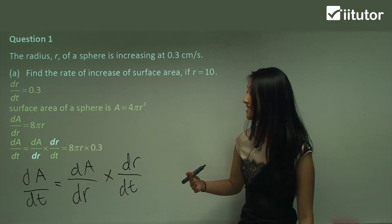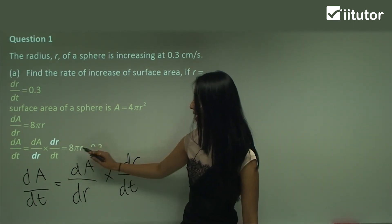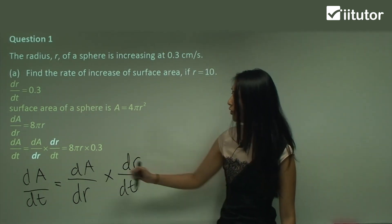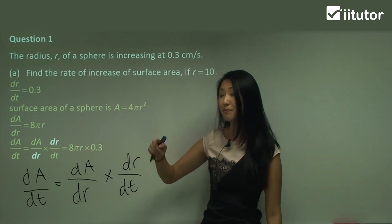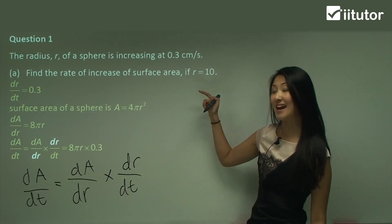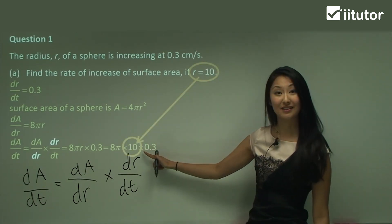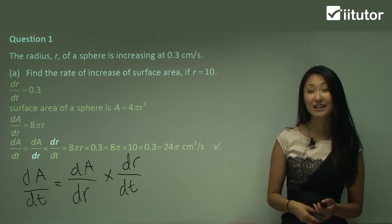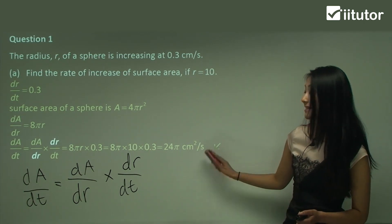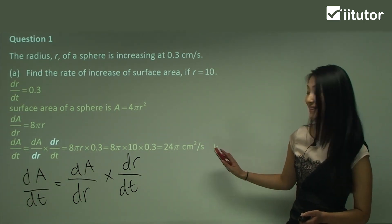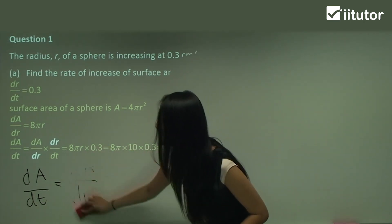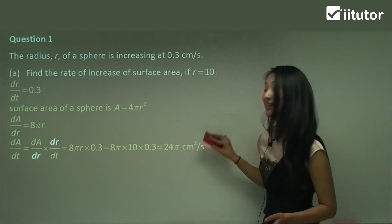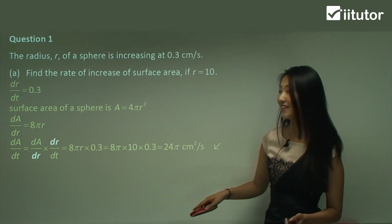So the best way to work this out is by separating it into dA on dr and dr on dt, then substituting in those values: 8πr multiplied by 0.3. There's still the unknown r, but remember it's told you when r equals 10, so you just substitute that in. Simple calculator work gives us the rate of increase for the surface area as 24π centimetres squared per second. I stress that 'squared' — don't get marked down for forgetting centimetres squared for your surface area.